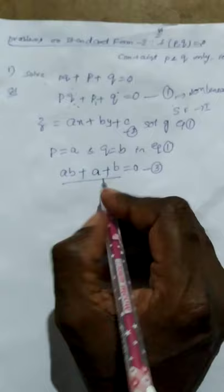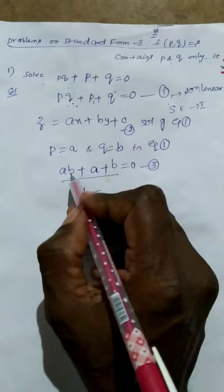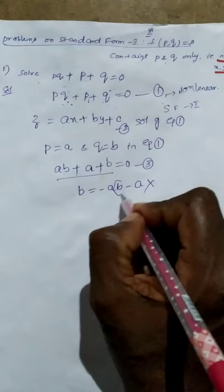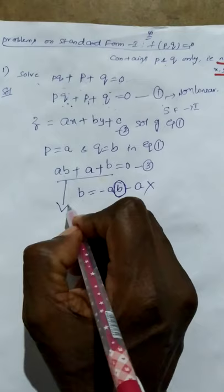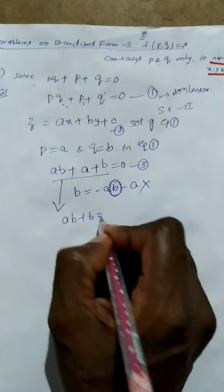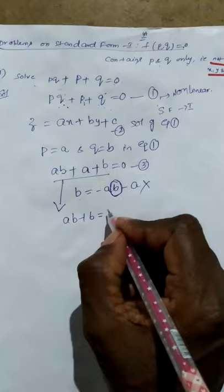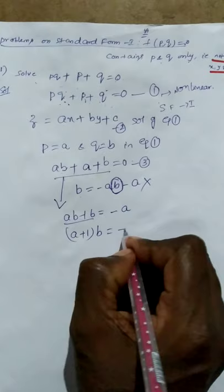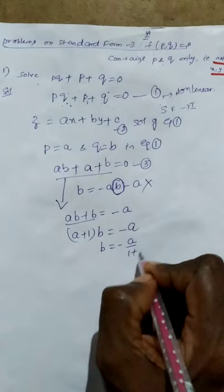Suppose we write b = -ab - a. This is not correct, because while writing the value of b, it must not contain b again. To write it correctly, we write the terms containing b on the left-hand side: ab + b. We write the terms not containing b on the right-hand side: -a. Taking b as common: (a + 1)·b = -a. Therefore b = -a / (1 + a).